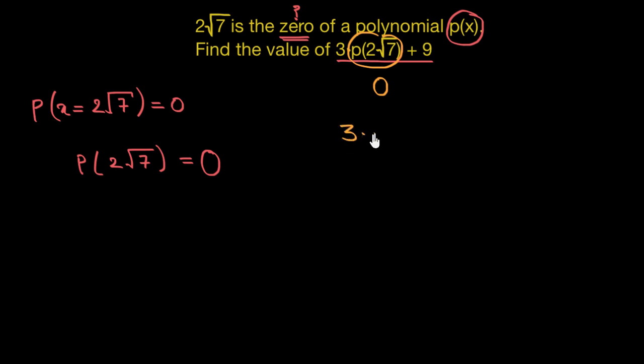So this means 3 times zero plus 9. 3 times zero is zero plus 9. So this is equal to 9. So the value of this given expression is equal to 9.